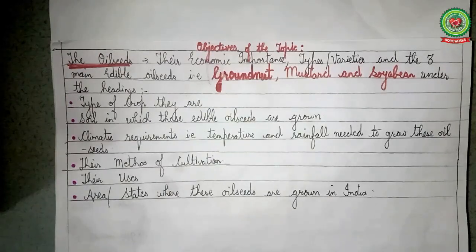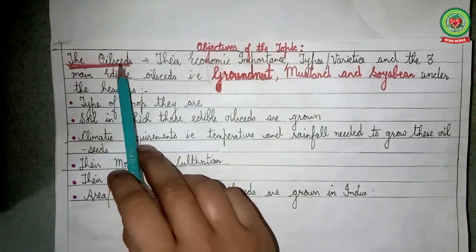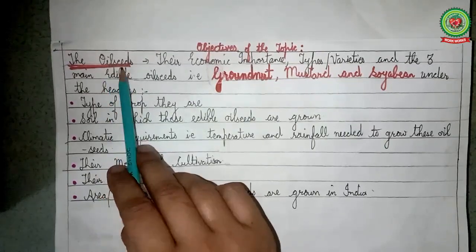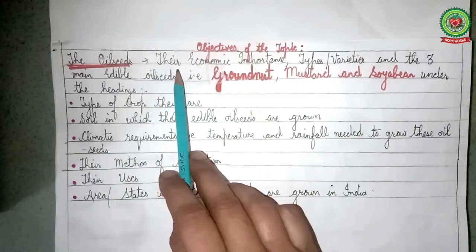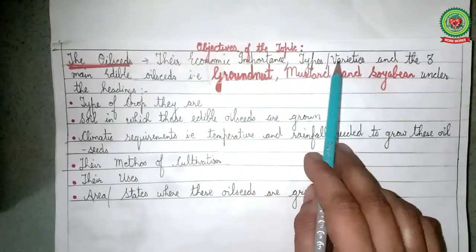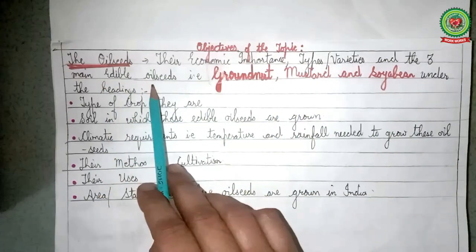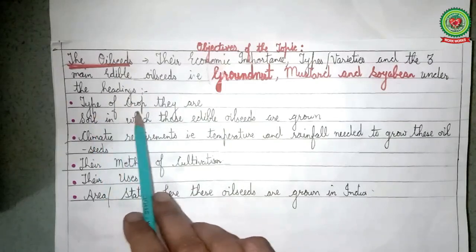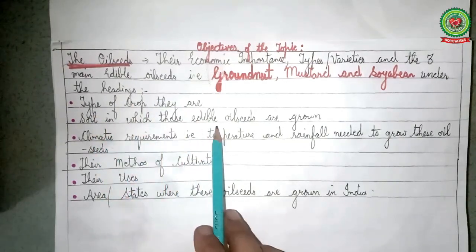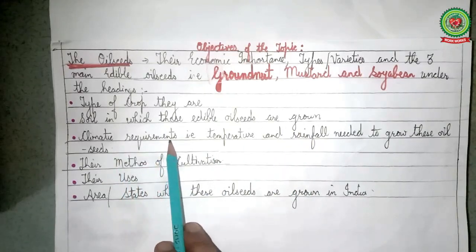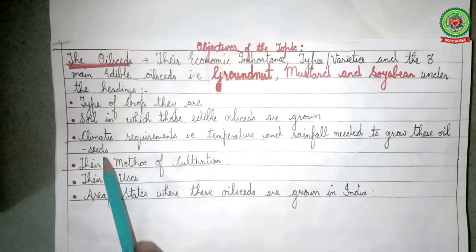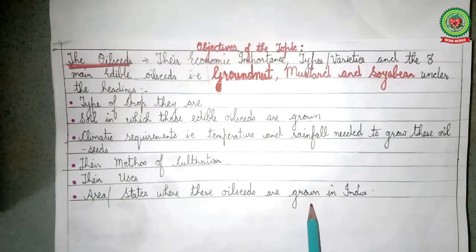After cotton and jute, we covered oil seeds, specifically the three main edible oil seeds: groundnut, mustard, and soybean. We studied their economic importance, types, varieties, type of crop, soil requirements, climatic requirements of temperature and rainfall, methods of cultivation, their uses, and the area and states where these oil seeds are grown in India.